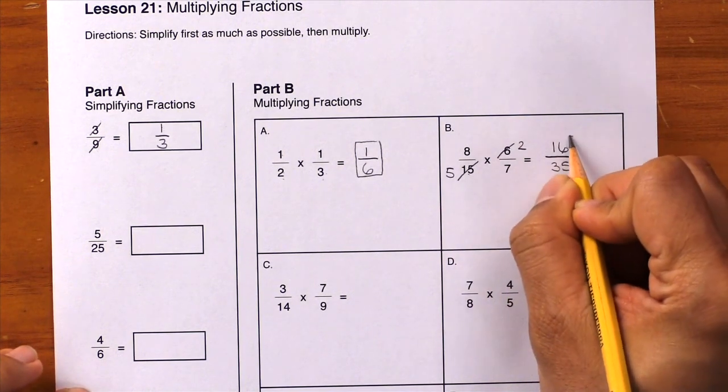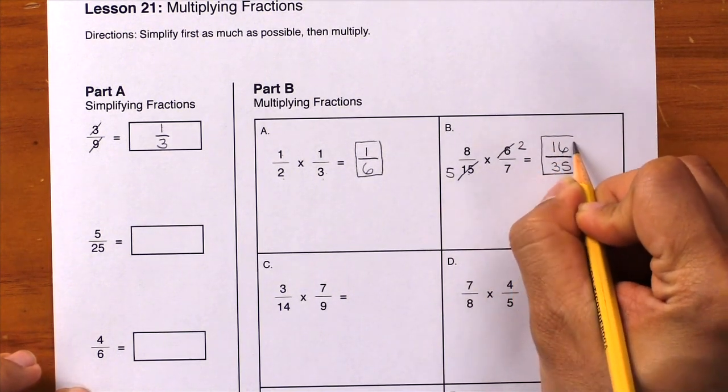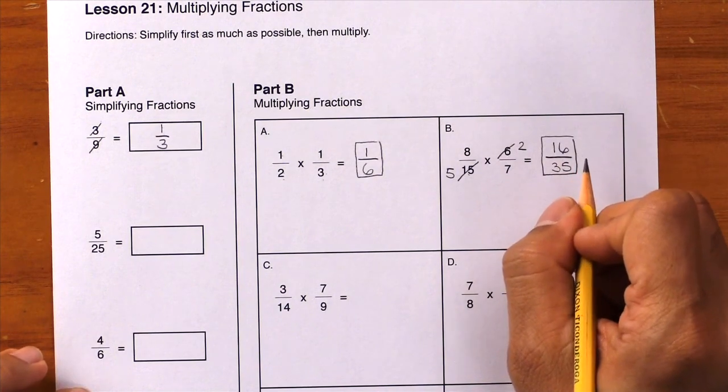Write it down and box your final answer of 16/35. Finally, let's look at our last example from Part B.